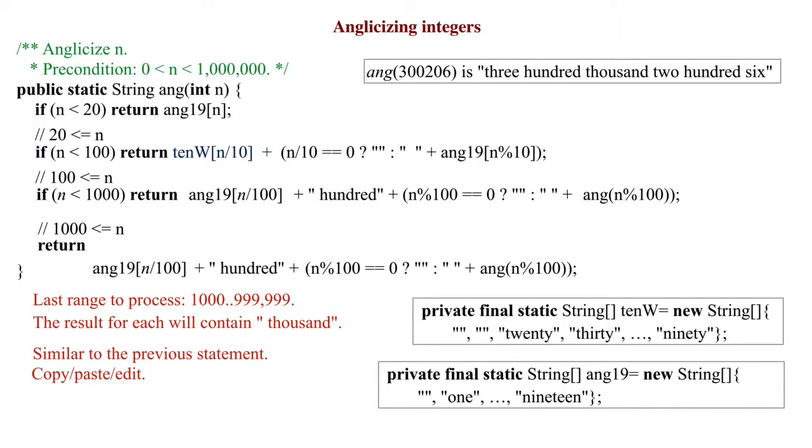We call ang recursively to anglicize n div 1000. Then comes the word thousand with a blank before it. The conditional expression gives either the empty string or a blank followed by n remainder 1000, anglicized of course.